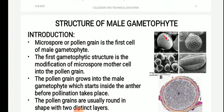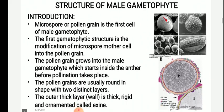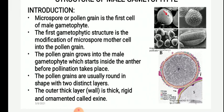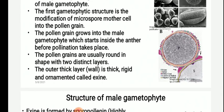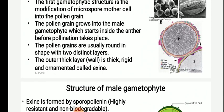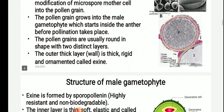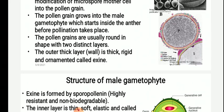Before going into the various developmental aspects, let us first study the structure of the male gametophyte. Microspore or pollen grain is the first cell of the male gametophyte. The first gametophytic structure is the modification of the microspore mother cell, which undergoes meiosis to produce pollen grain. Pollen grain grows into male gametophyte, and this starts inside the anther before pollination takes place — the pollen grain starts dividing when it is still inside the anther.